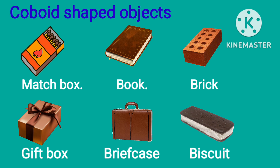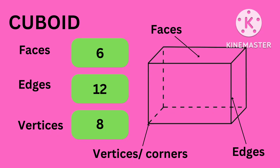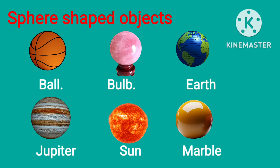Cuboid-shaped objects: look at the shapes of objects below. All these objects have the shape of a cuboid — matchbox, book, brick, gift box, briefcase, biscuit. The cuboid has six faces, 12 edges, and eight vertices or corners.